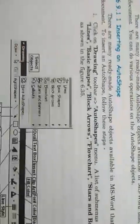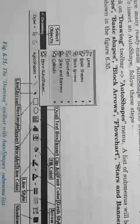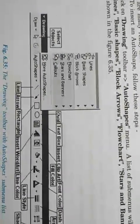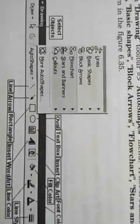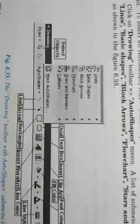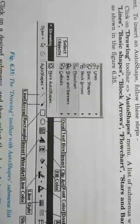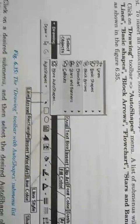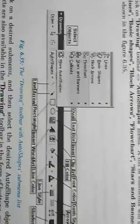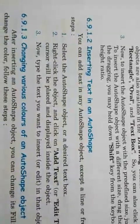This is the drawing toolbar which you get at the bottom, containing many options. In AutoShapes you have options like callouts, stars and banners, flowcharts, block arrows, basic shapes, and lines. These types of shapes are mostly used in designing templates or advertising materials in newspapers. You can draw any AutoShape, including lines.